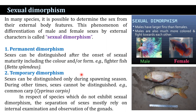What is temporary dimorphism? Sexes can be distinguished only during the spawning season; during other times the sexes cannot be distinguished. That is found in common carp such as Cyprinus carpio. In species which do not exhibit sexual dimorphism, separation of the sexes mostly relies on internal examination — observation of testes or ovary.